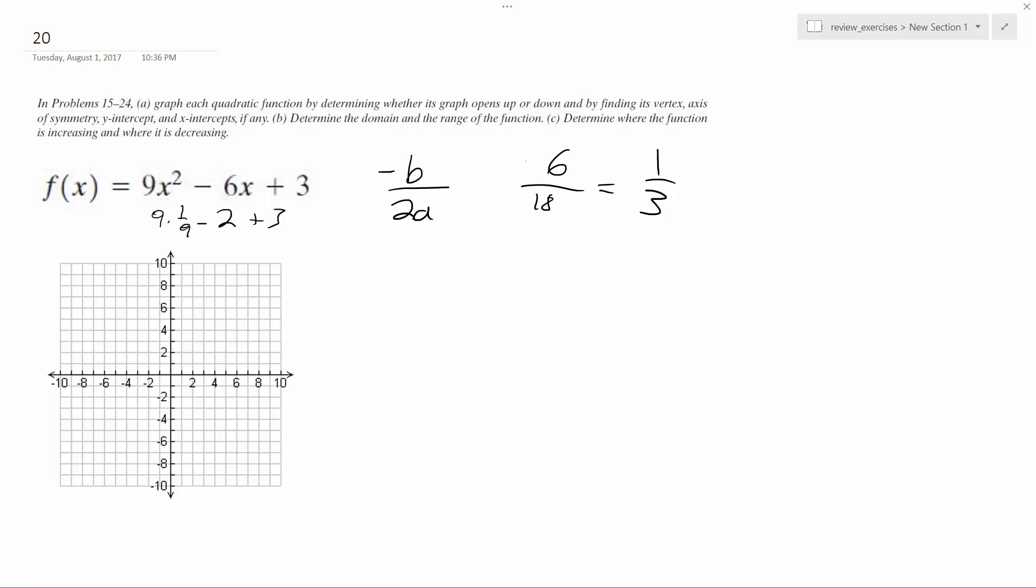So that ends up being, I better just be safe, this ends up being 1 minus 2 plus 3, so that's negative 1 plus 3 which is 2. So the vertex is 1 third comma 2.